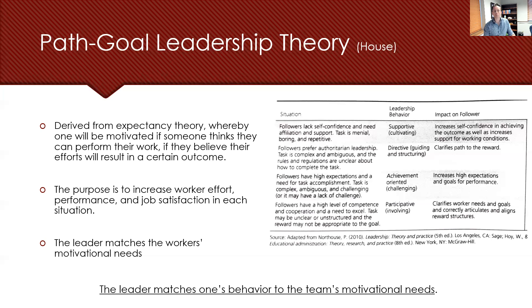Tasks may be unclear at times, and rewards aren't always linked to the appropriate goal at hand. The leader typically clarifies worker needs and goals as they progress. The leader must match their behavior to the team's motivational needs — that's really the essence of path-goal leadership theory: matching those motivational needs depending upon the purpose at hand.